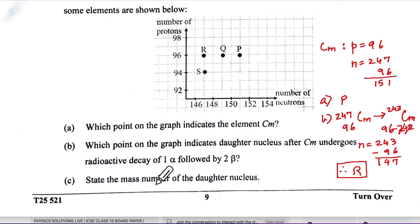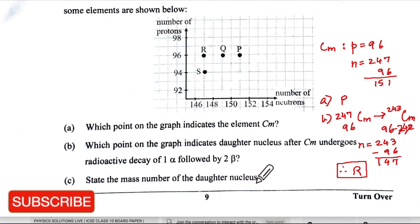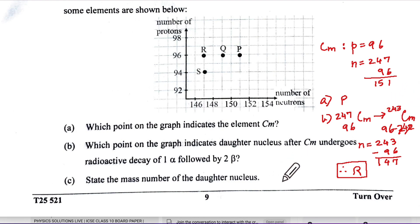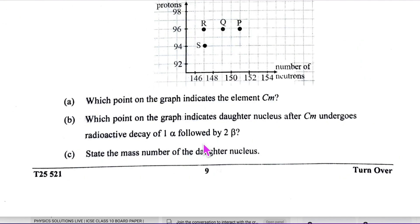Part c: the mass number of the daughter nucleus is 243. That completes Section A of 40 marks. In the next video, Section B will be covered.